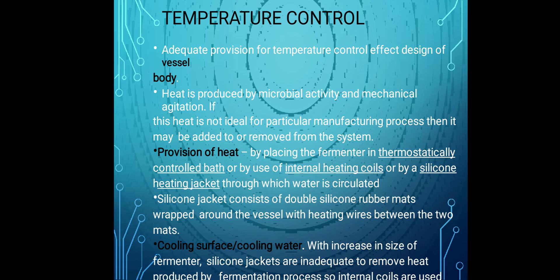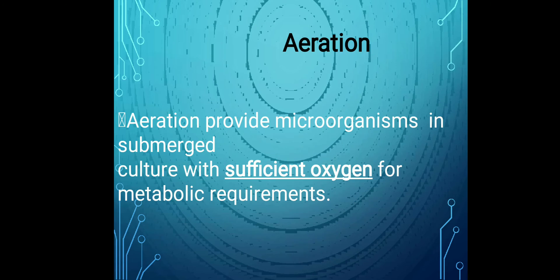Temperature control is an important design consideration. Heat is produced by microbial activity or mechanical agitation from the impeller. If this heat is not ideal for the manufacturing process, it may need to be added or removed from the system. Temperature is controlled by placing the fermenter in a thermostatically controlled bath, or by using internal heating coils, or a silicon heating jacket through which water is circulated.